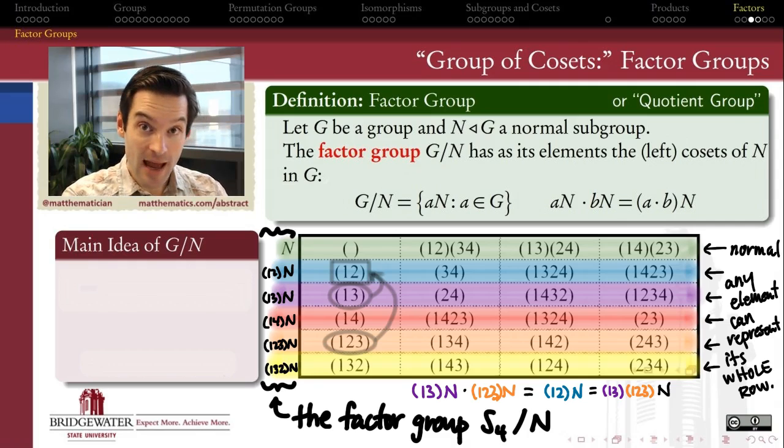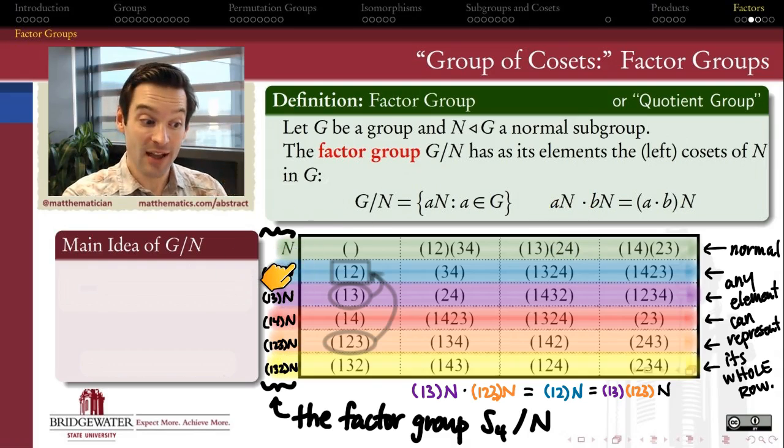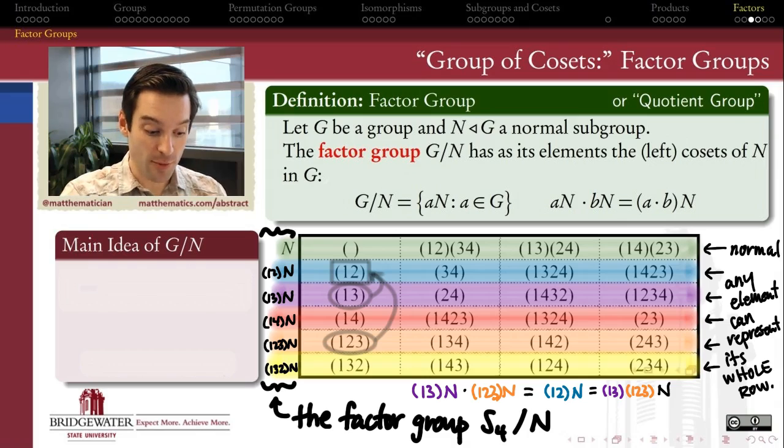That was our original definition and motivation for what makes a subgroup a normal subgroup to begin with. And so that's exactly how we define the operation in the factor group as well. That the element aN multiplied by the element bN, in the larger group we think of this as a coset times a coset. In the factor group, we think of it as an element times an element. This element (1 3)N multiplied by that element (1 2 3)N is going to give me the element (1 3) times (1 2 3), that's (1 2) times N. So the elements in my factor group are the cosets, and the operation is multiplication by the representatives of those cosets. aN multiplied by bN gives me ab multiplied by N.